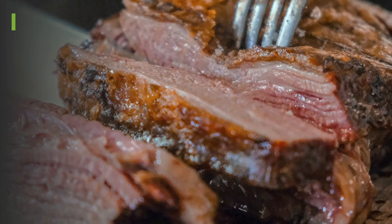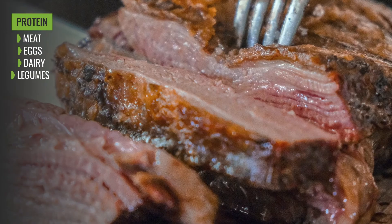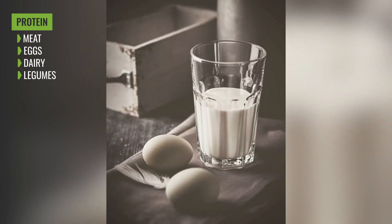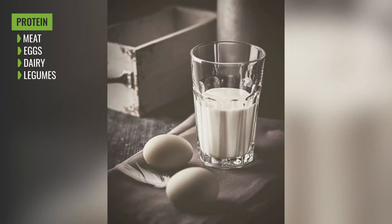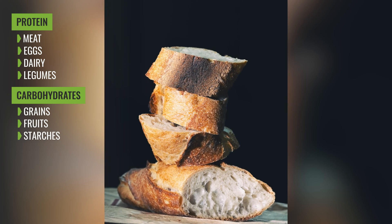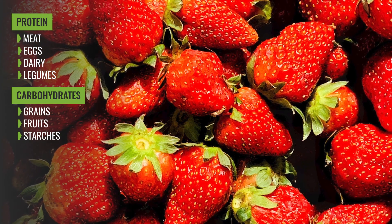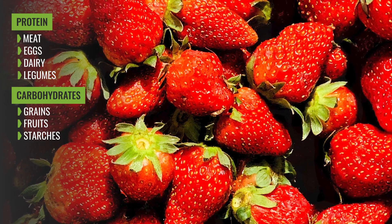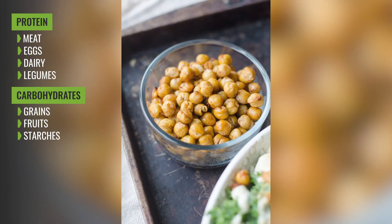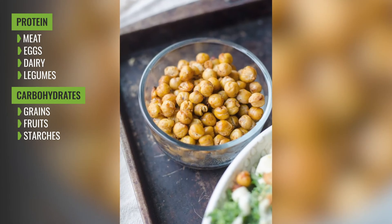Protein, you'll find in large amounts in meat, eggs, dairy, and legumes, and it helps to build and repair muscle. Carbohydrates, which you get in grains, fruits, and starches, support energy levels and also provide fiber — which is a type of carbohydrate that improves digestive health and nutrient absorption.